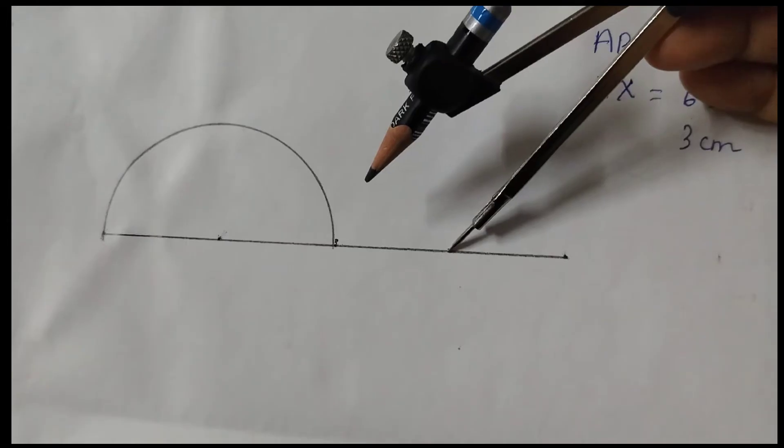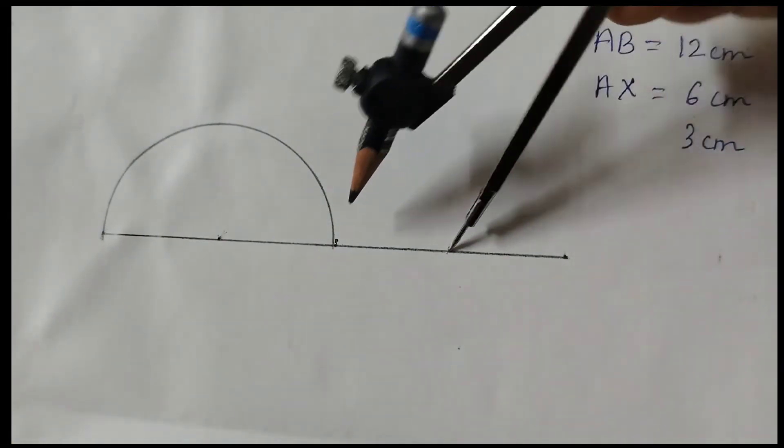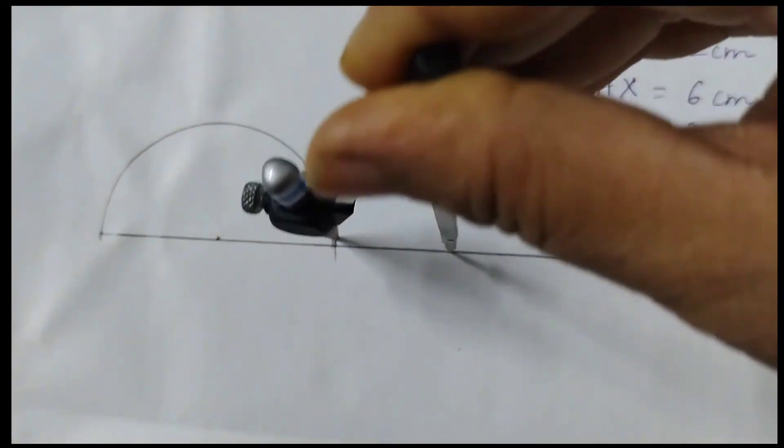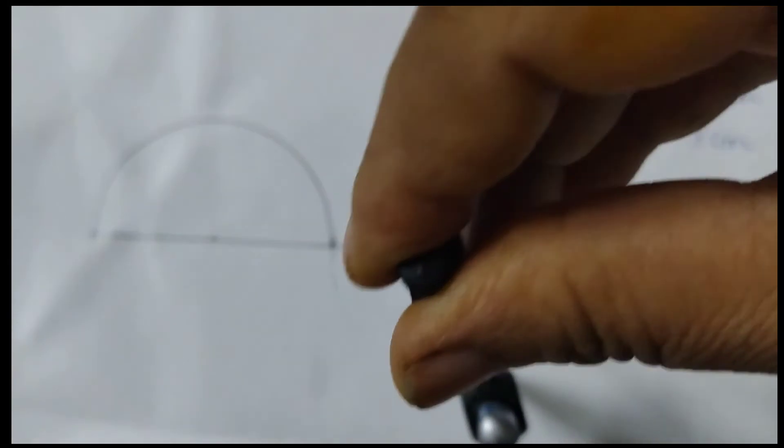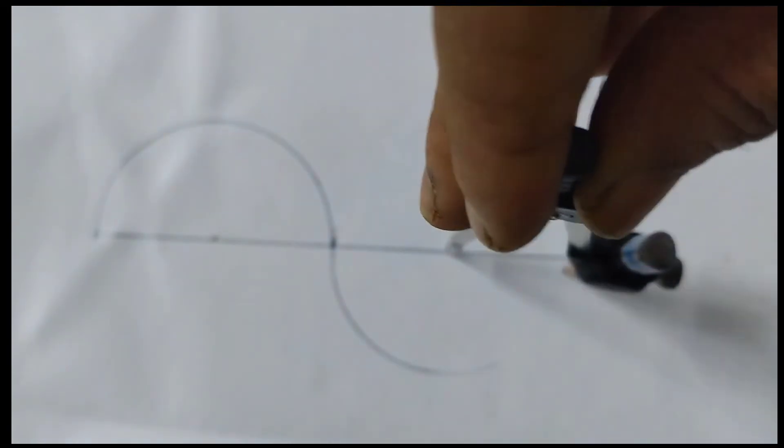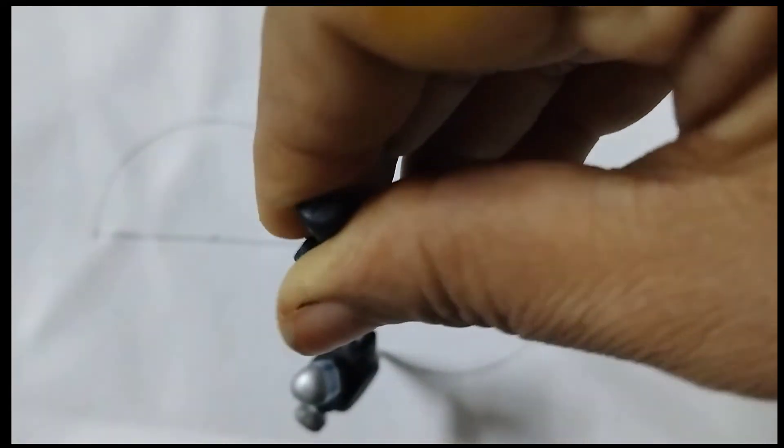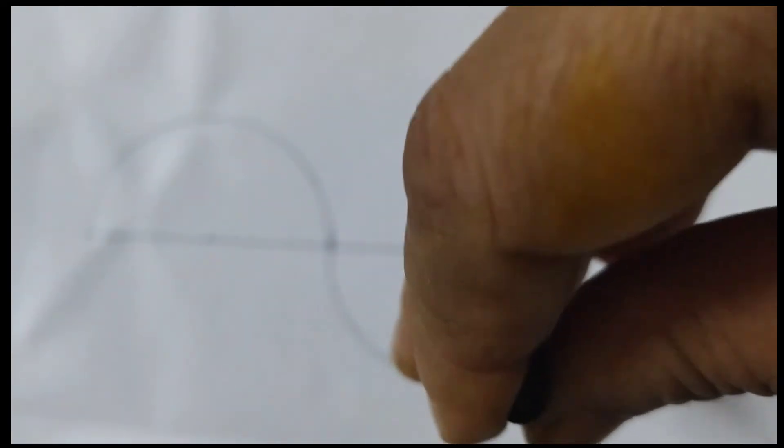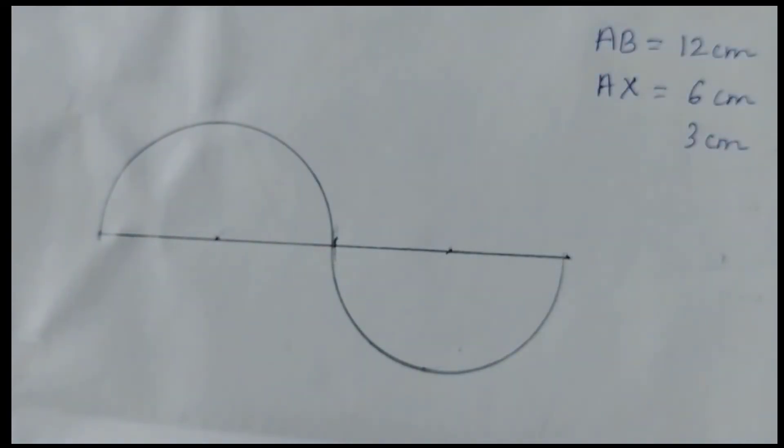This is done. And now the same radius we're going to take and keep the metal point here and draw this side. See here? It will come to the end point.